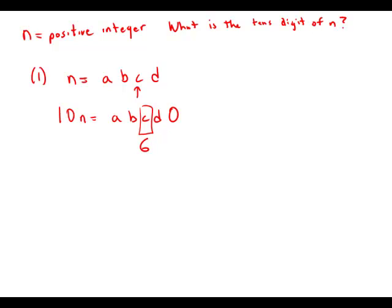the hundreds digit of 10n has to equal the tens digit of n. So the tens digit of n would have to be 6. This statement by itself is completely sufficient to answer the question.